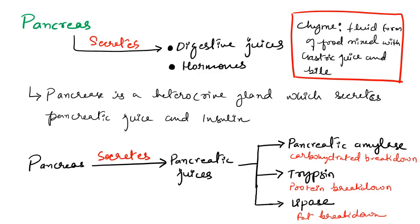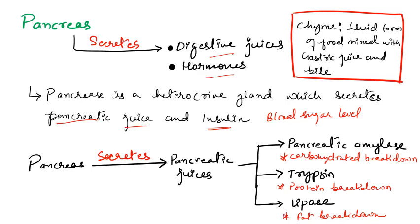Next comes the pancreas. Pancreas secretes digestive juices and hormones, so it is a heterocrine gland. Pancreas also produces insulin, which helps in the maintenance of blood sugar level, but our focus here is on the digestive system. Pancreas produces pancreatic juice, which has three types: pancreatic amylase, which helps in the breakdown of carbohydrates; trypsin, which helps in the digestion of protein; and lipase, which helps in the breakdown of fat. In this way, the pancreas helps in the digestion process.